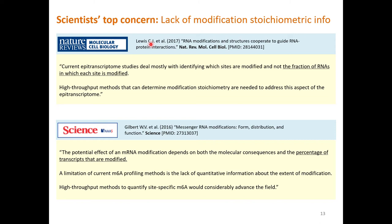The lack of modification stoichiometry has been scientists' top concern in the field, as noted in commentaries in Nature Review Molecular Cell Biology: current transcriptome studies reveal mostly which sites are modified and not the fractions of RNA in which each site is modified. High-throughput methods that can determine modification stoichiometry are needed. In Science: the potential effects of an mRNA modification depend on both the molecular consequences and the percentage of transcripts that are modified — a limitation of current M6A profiling methods. High-throughput methods to quantify site-specific M6A will considerably advance the field.